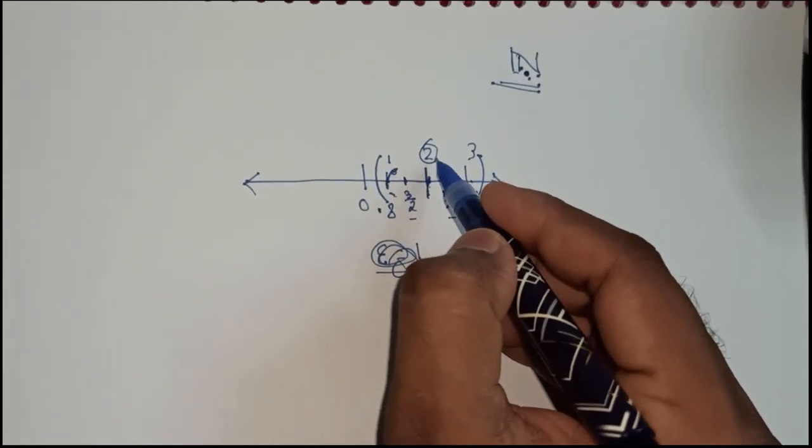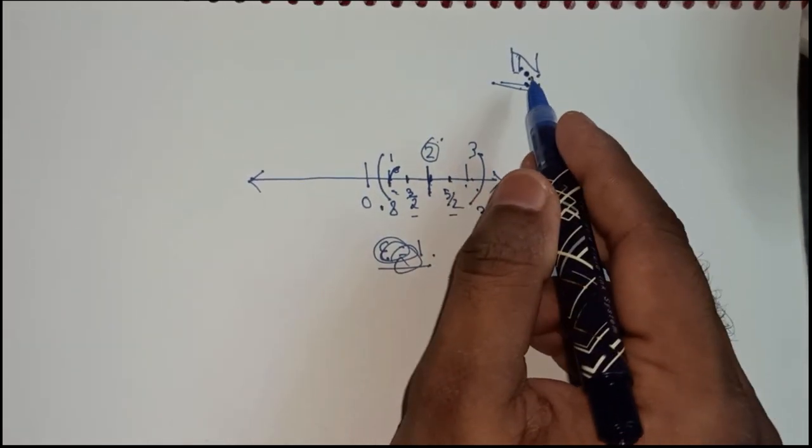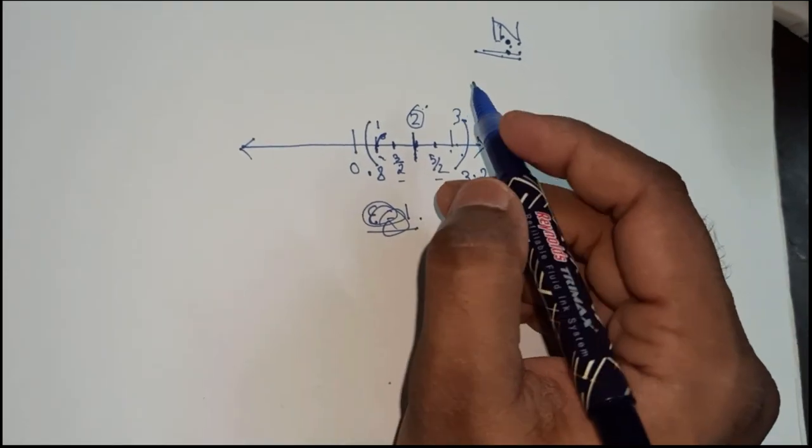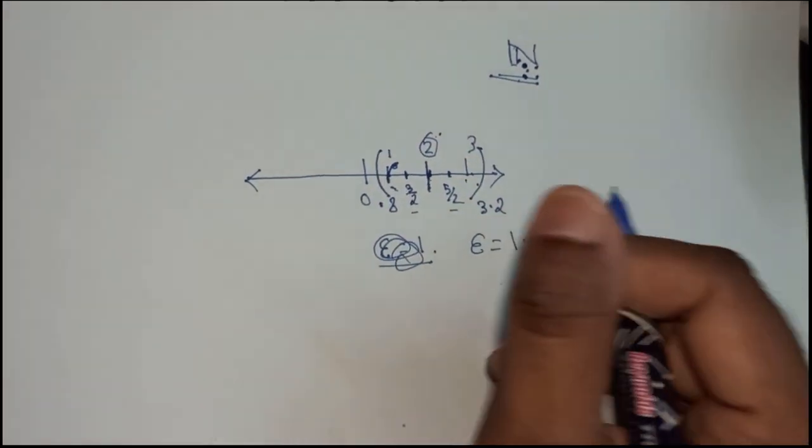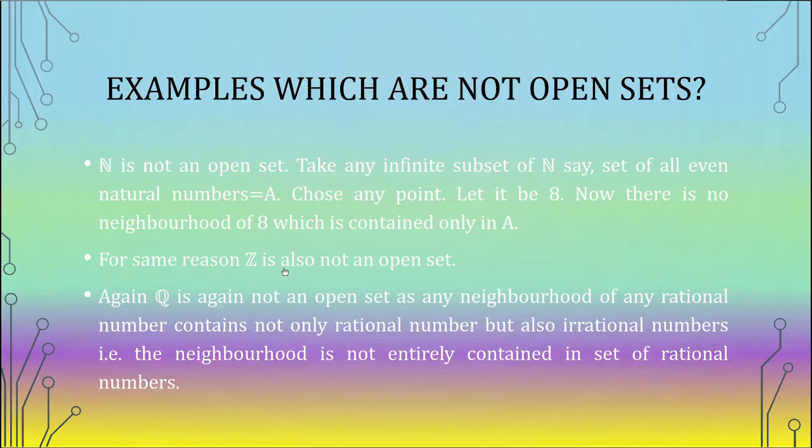And for the same reason, Z is also not an open set. Obviously, Q will not be an open set, because any neighborhood of Q will not only contain the rational numbers, but it will also contain the irrational numbers. So the neighborhood of Q is not entirely contained in the set of all rational numbers.